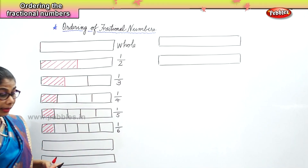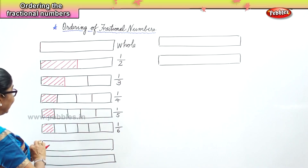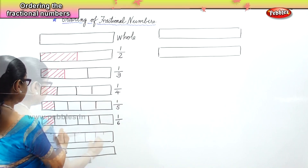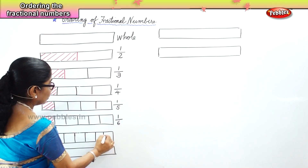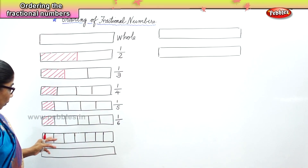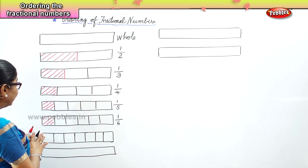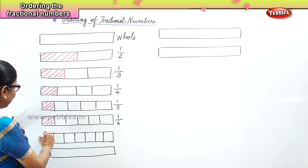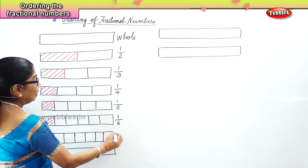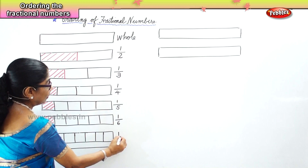Next we are going to divide this strip into seven parts — one, two, three, four, five, six, seven. The whole is divided into seven parts and I am going to color only one portion. In fractional number, that is one part out of seven parts.